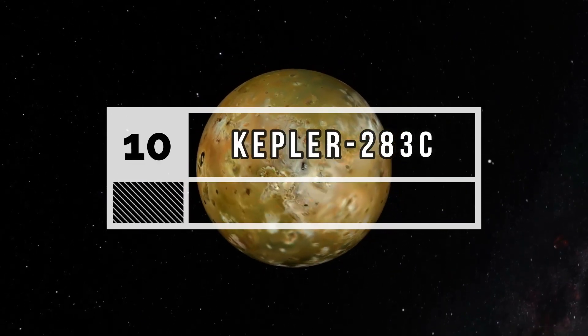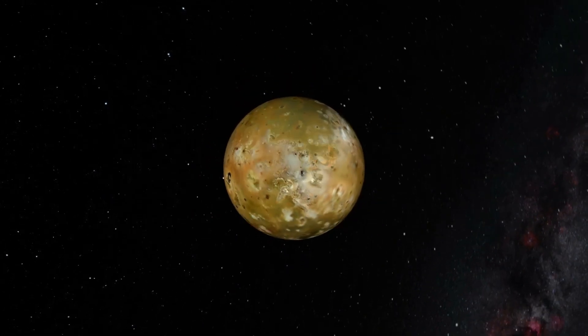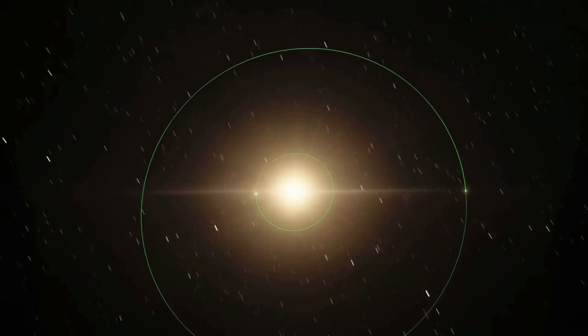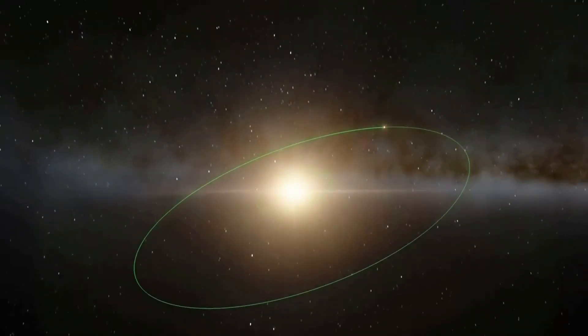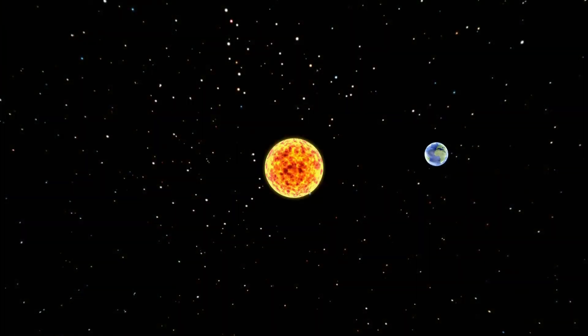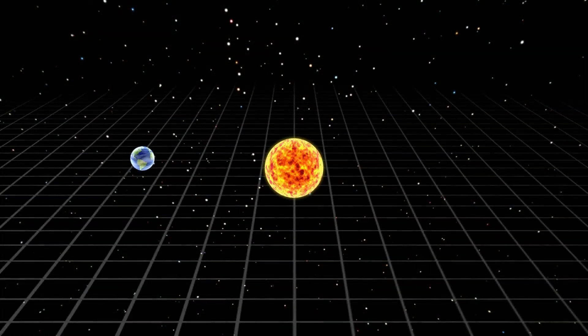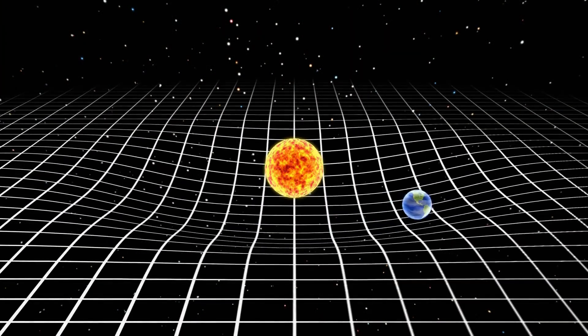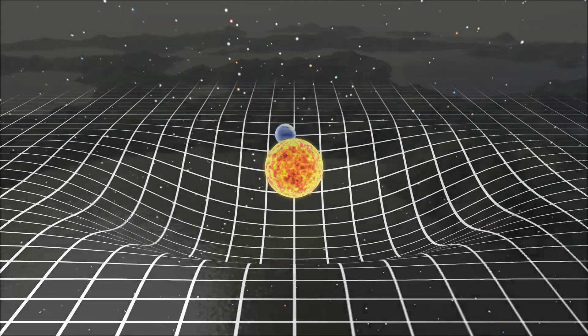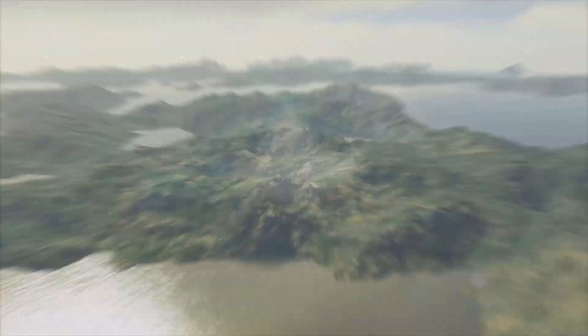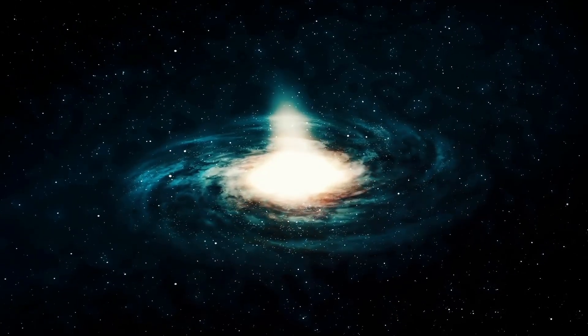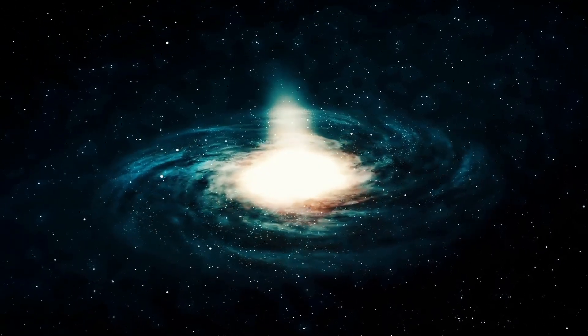Number 10: Kepler-283c. There are two planets that orbit around the star Kepler-283. One of them is Kepler-283b, which is too close to the star and therefore it is very hot. The other one is Kepler-283c, which is at the right distance from Kepler-283 to sustain life. It is found in the hospitable zone, also called Goldilocks conditions.